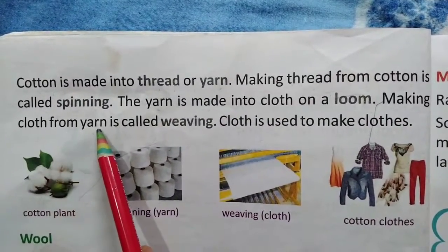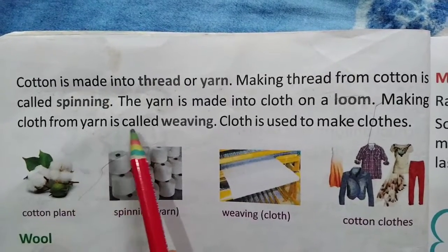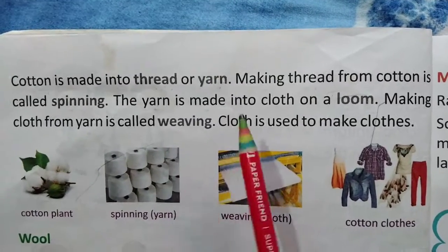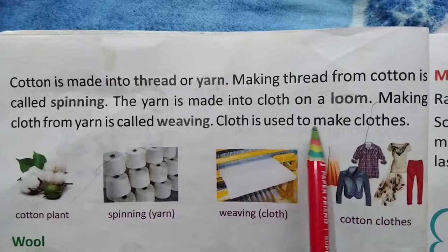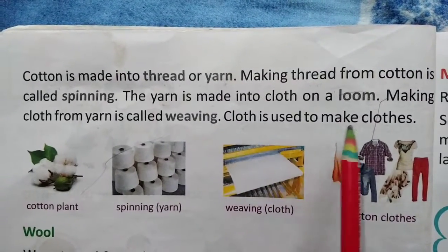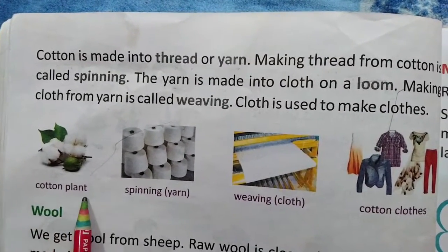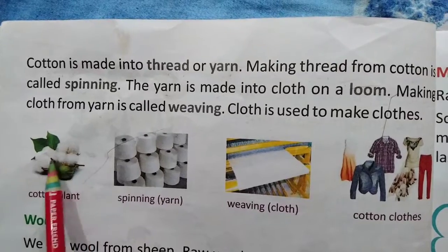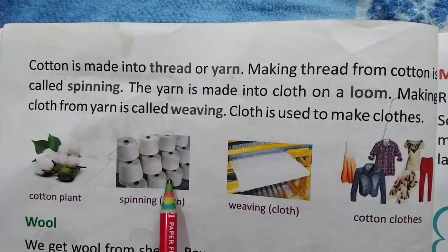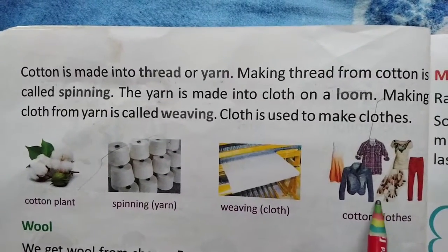Making cloth from yarn. The yarn is made into cloth on a loom. Making cloth from yarn is called weaving. Cloth is used to make clothes. Cotton plant, spinning yarn, weaving cloth, cotton clothes.